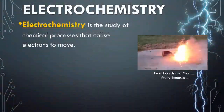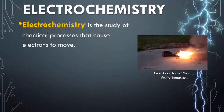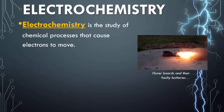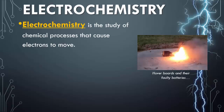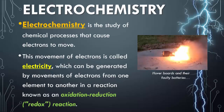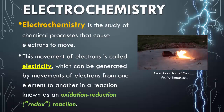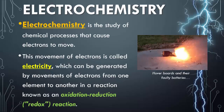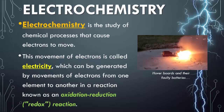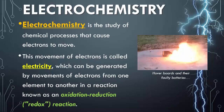So what is electrochemistry? Electrochemistry is the study of a chemical process that causes electrons to move. The movement of electrons is called electricity, which can be generated by movement of electrons from one element to another, known as oxidation and reduction, or a redox reaction.